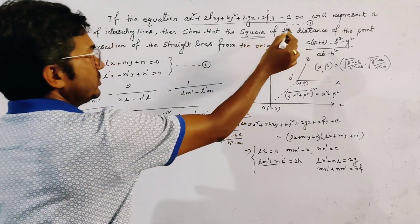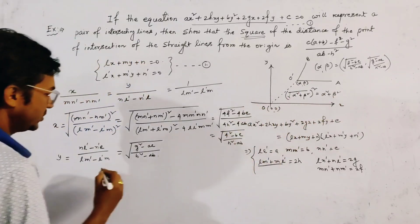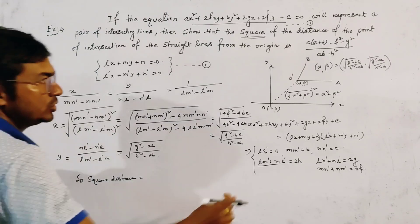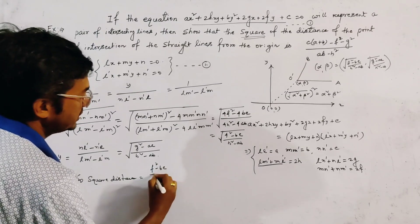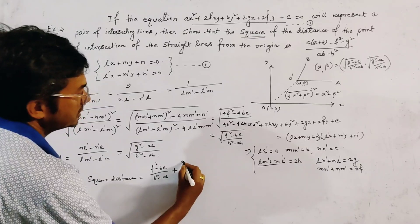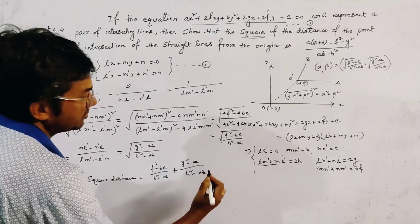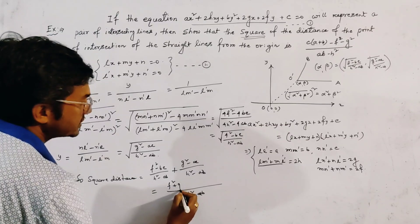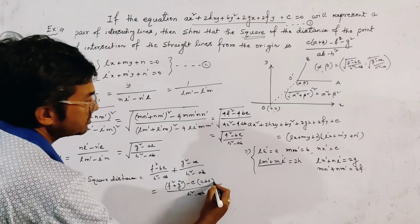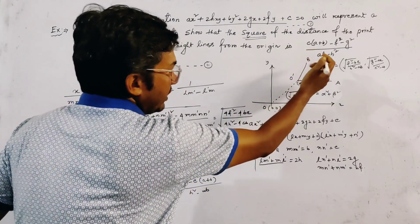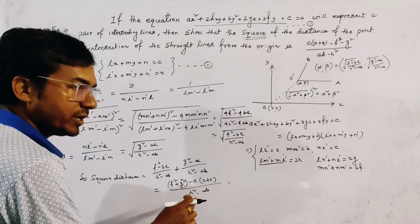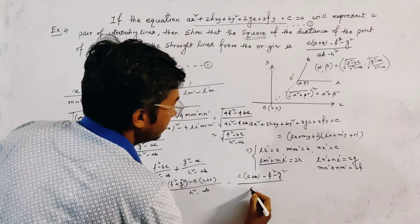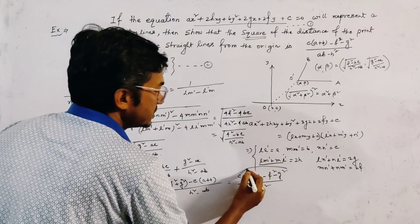The square distance from the origin to the point of intersection is given by α² + β². So square distance = α² + β² = (F² - BC)/(H² - AB) + (G² - AC)/(H² - AB). Taking H² - AB as the common denominator, the numerator is F² + G² - C(A + B). Since our given result uses AB - H² in the denominator, we multiply numerator and denominator by -1, giving C(A + B) - F² - G² all divided by AB - H².